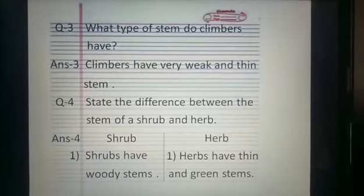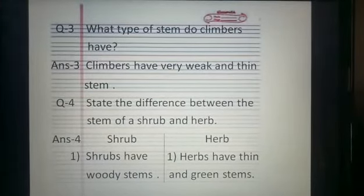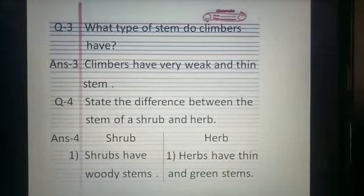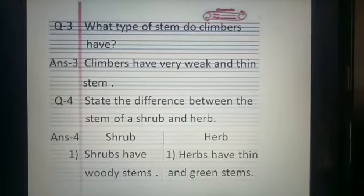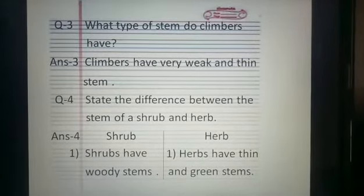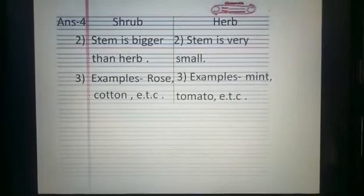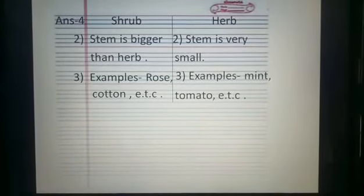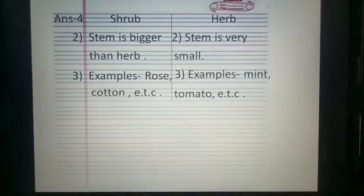Question number 4: State the difference between the stem of a shrub and herb. When a difference between two things is asked, divide the page into two halves using a pencil and scale. On the left write 'Shrub', on the right write 'Herb'. First point — Shrub: shrubs have a woody stem; Herb: herbs have a thin and green stem. Second point — Shrub: stem is bigger than herb; Herb: stem is very small. Third point — Shrub: examples are rose and cotton; Herb: examples are mint and tomato.